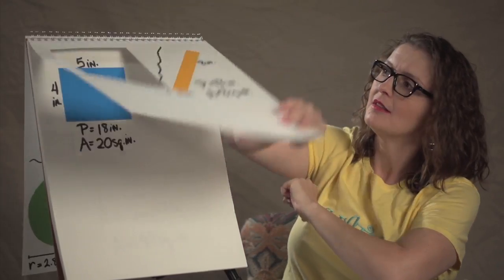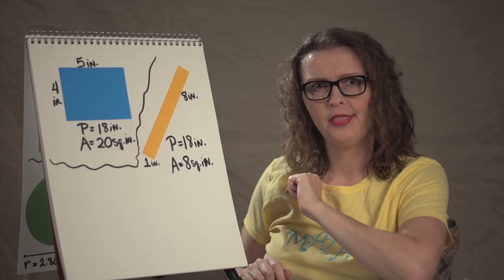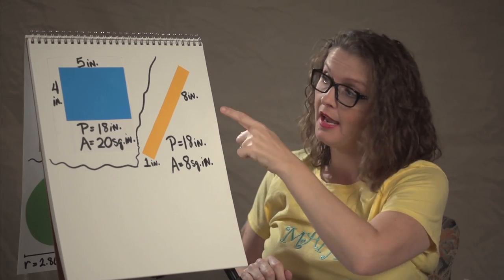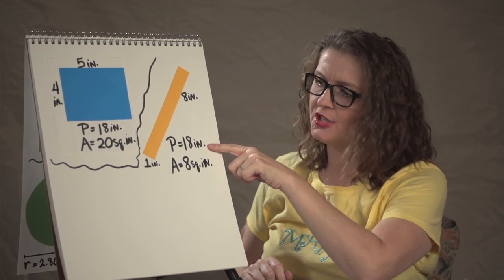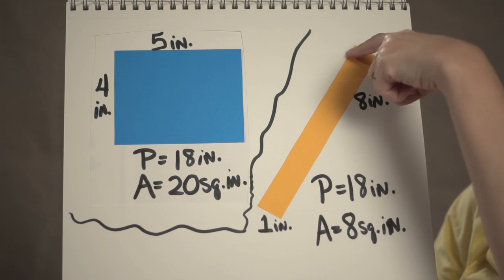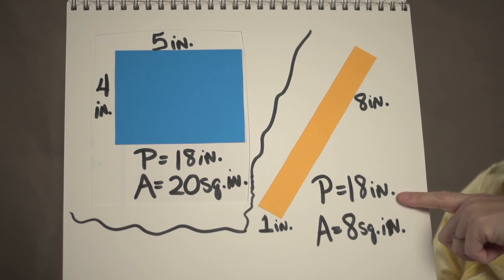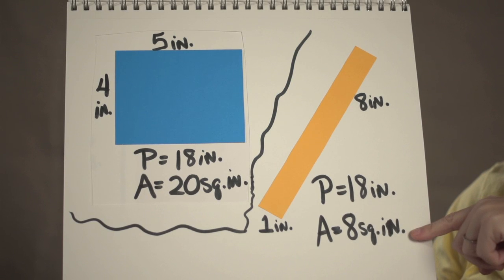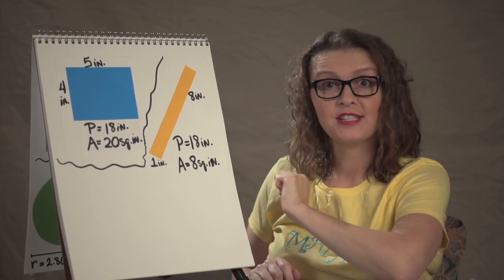Now consider this rectangle, long and thin, 1 inch wide, 8 inches long. Its perimeter is still 18 inches. 1 inch plus 8 inch plus 1 inch plus 8 inches is 18 inches. But the area is 1 inch times 8 inches, which is 8 square inches. Very different than this area.